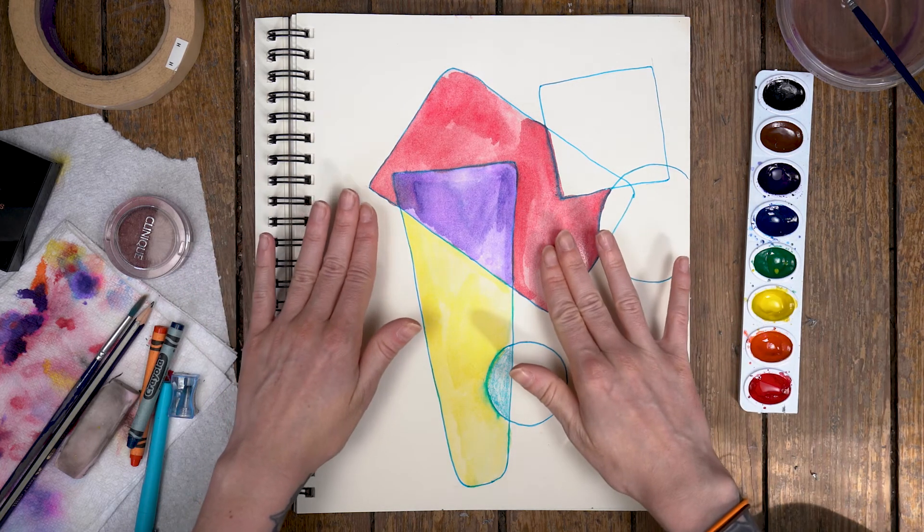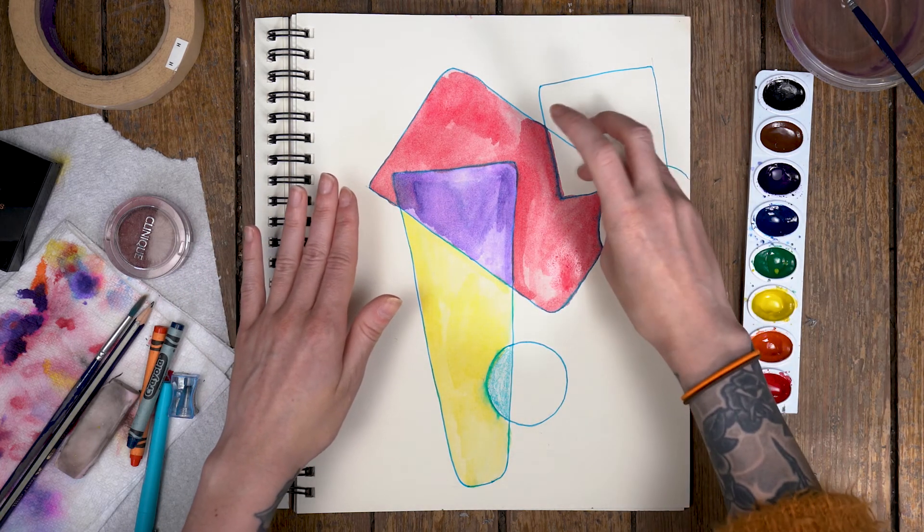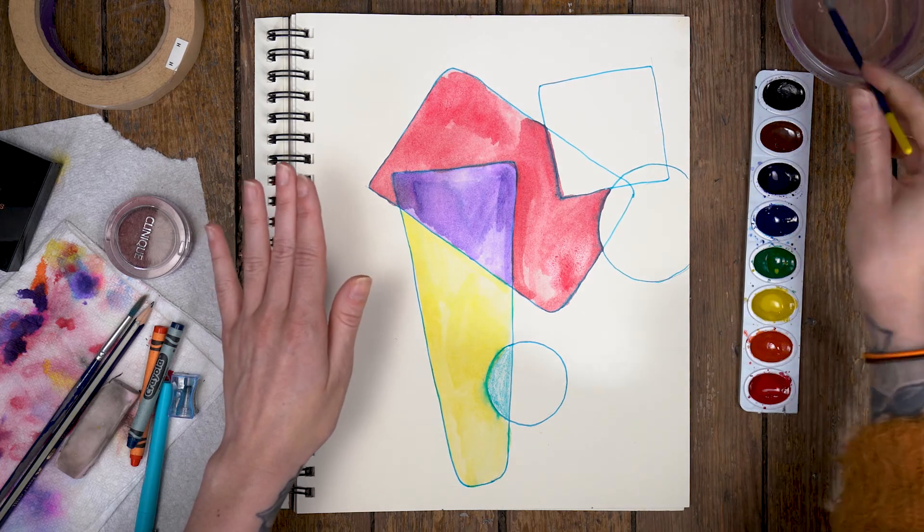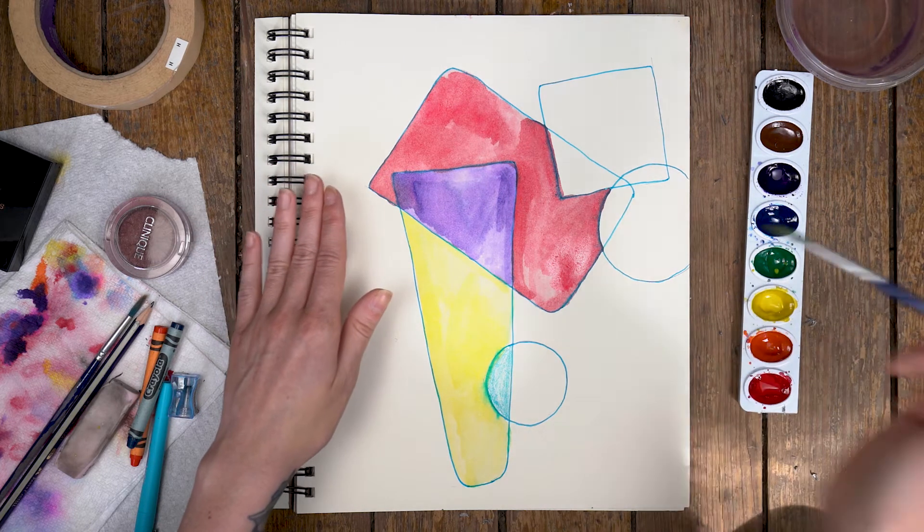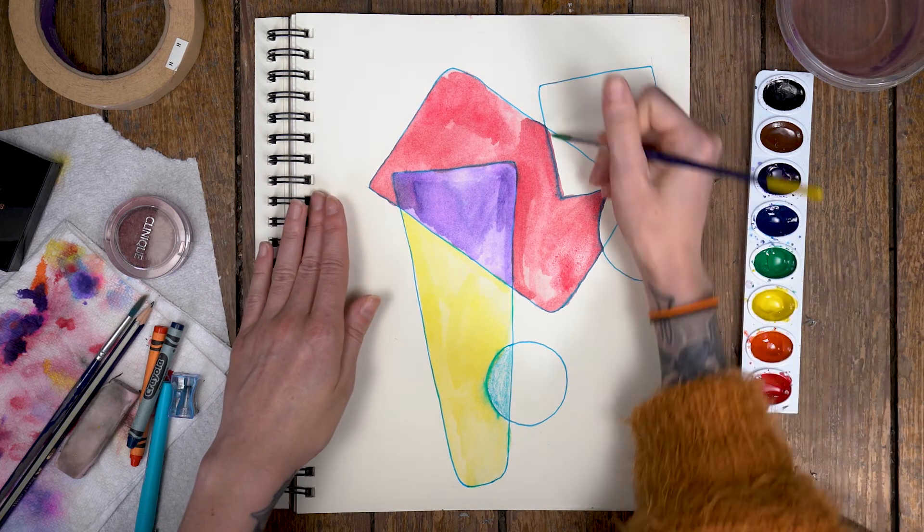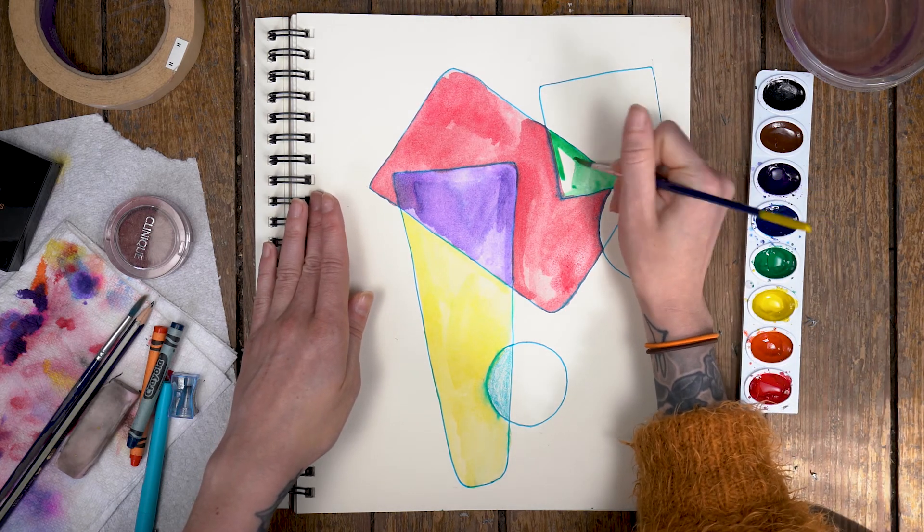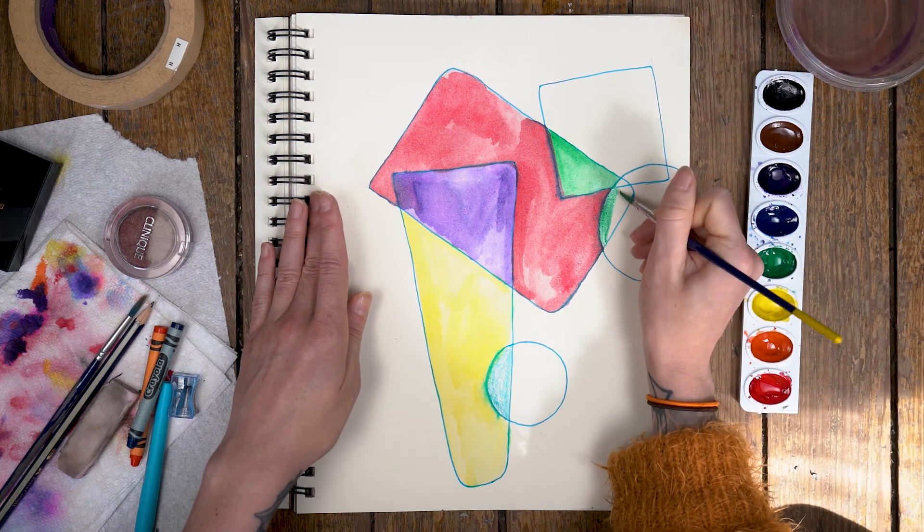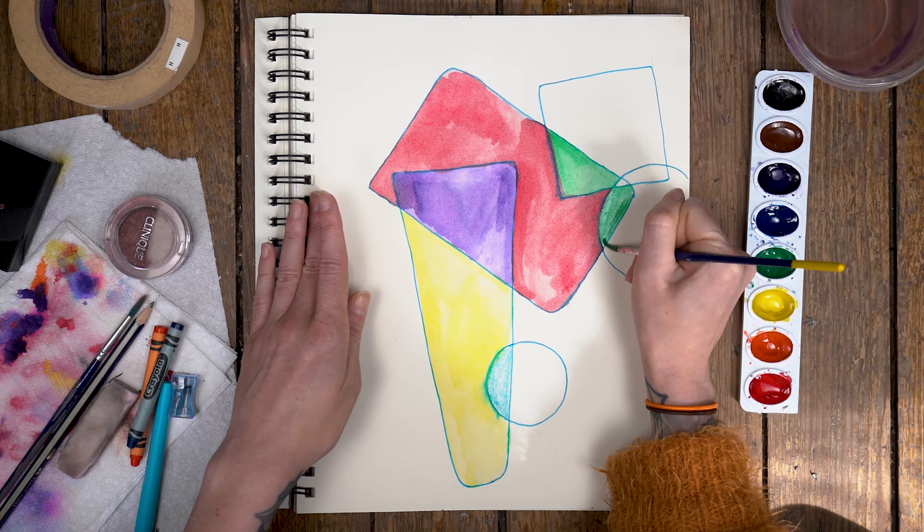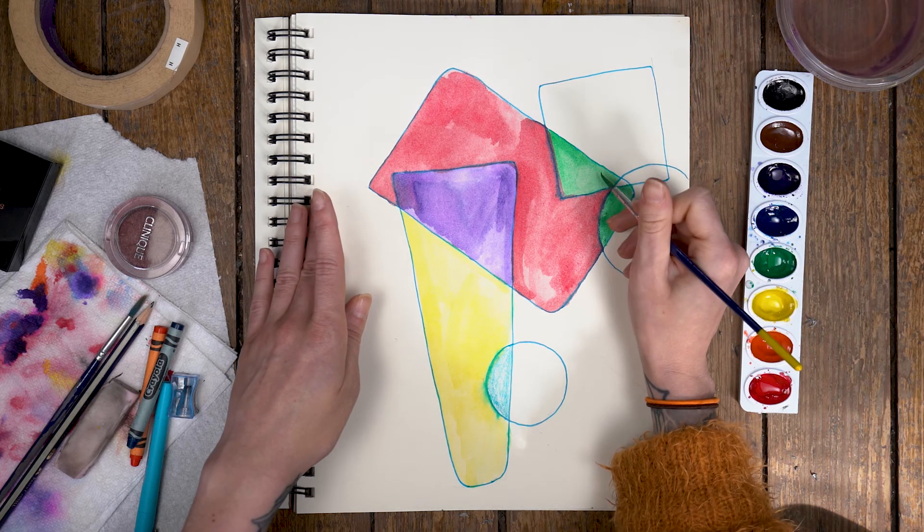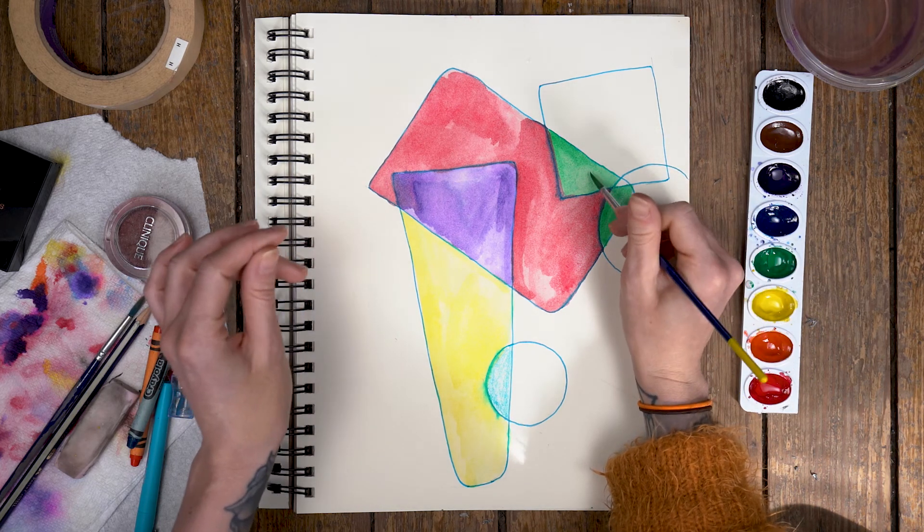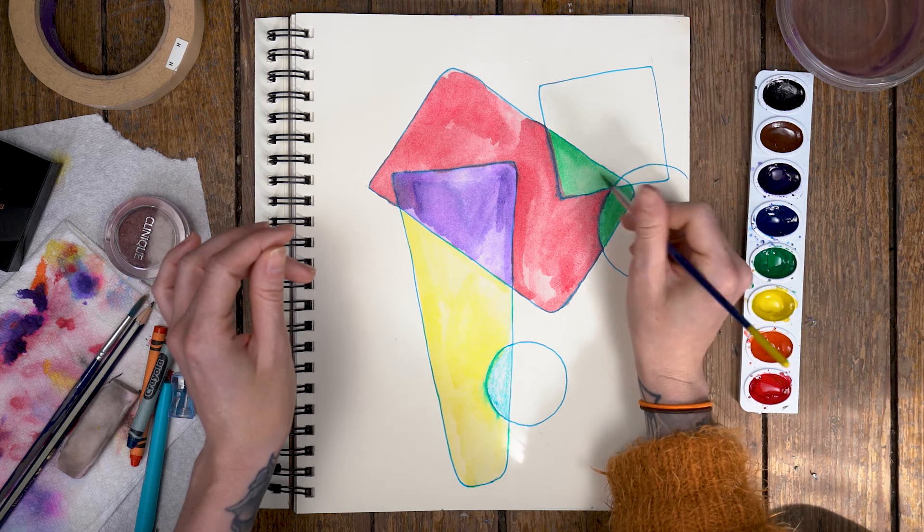Now that I have my warm tone with my red here, I'm going to actually do two cool tones in these spots. So I'm going to use my green now. Now I have a spot where we've got our cool tones.